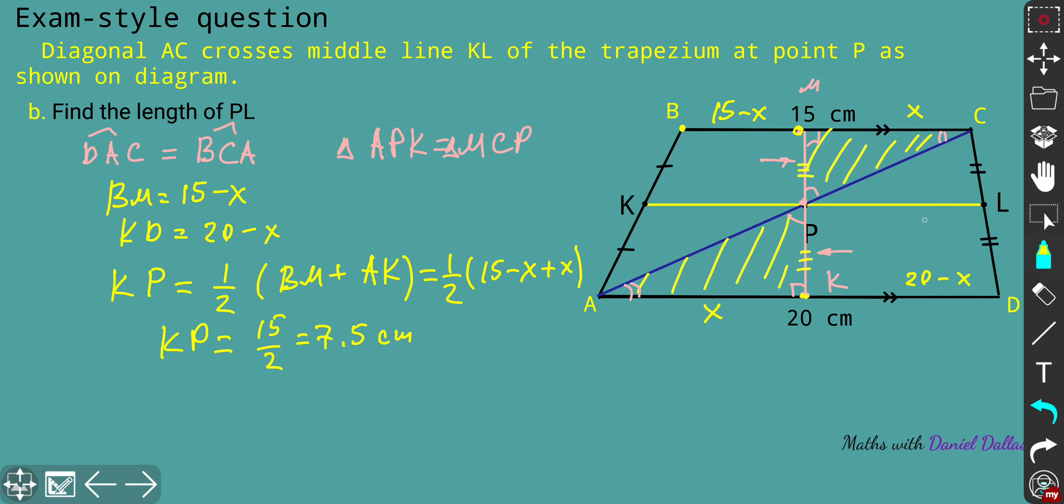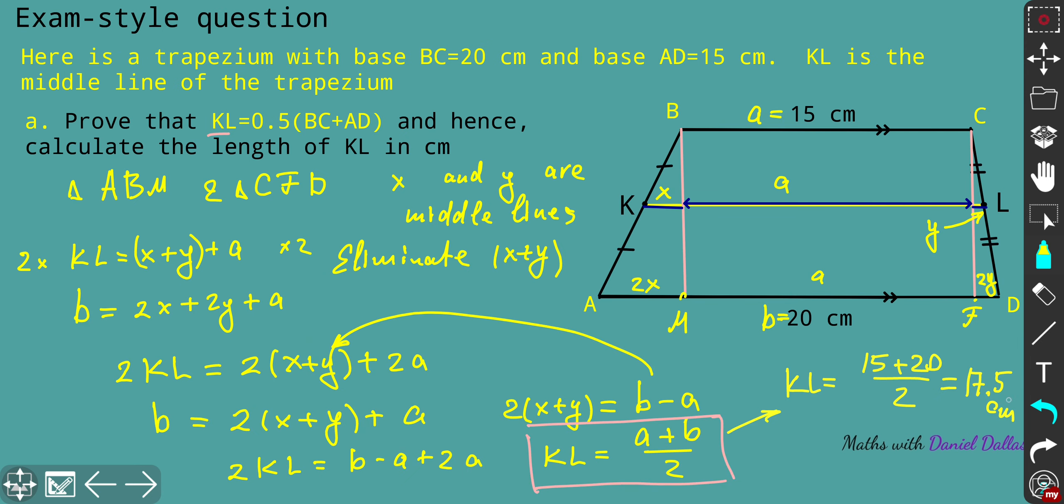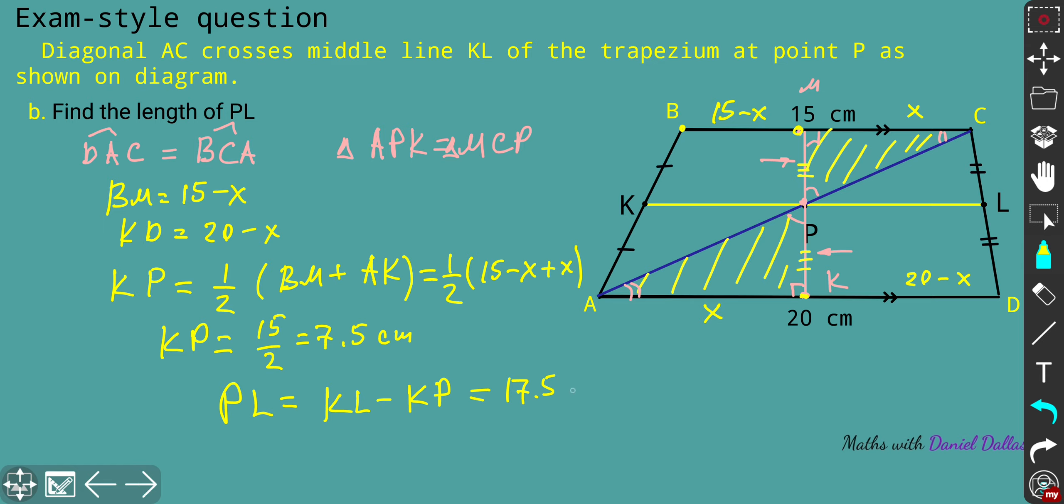How to find PL? It's very easy. PL, the rest part, is going to be the difference between KL and KP. I'll write in letters first: KL minus KP. If we put the values, we got KL is 17.5 from previous consideration, and we subtract 7.5, which means we'll get 10 for PL. That's how it can be worked out. PL is 10 centimeters.